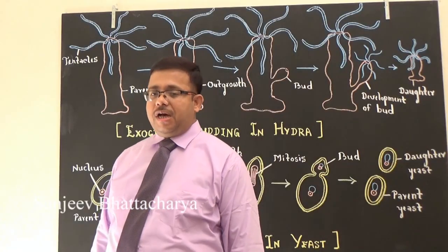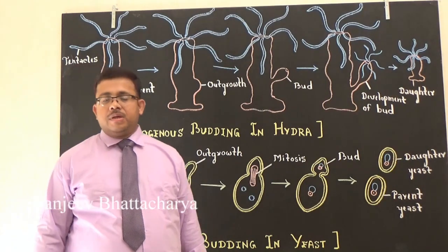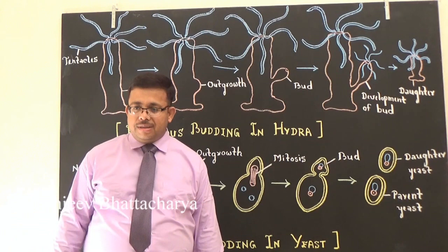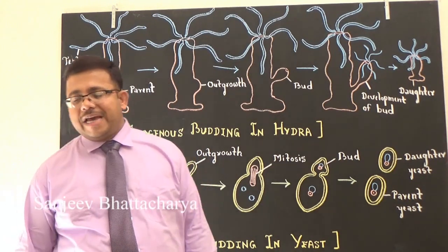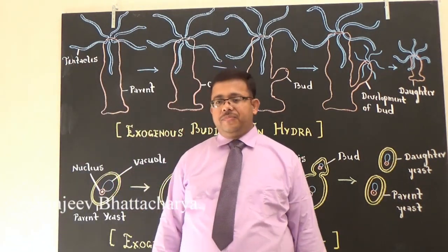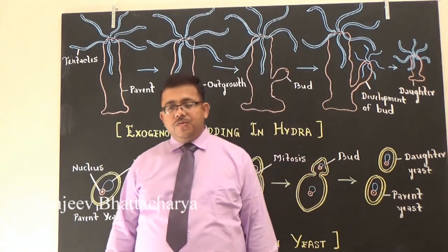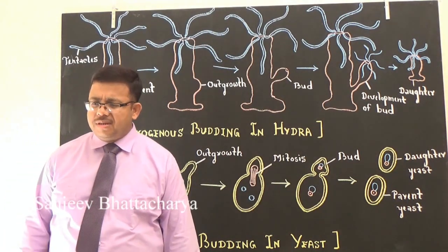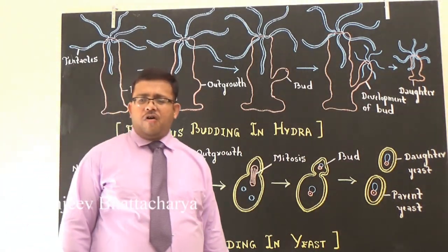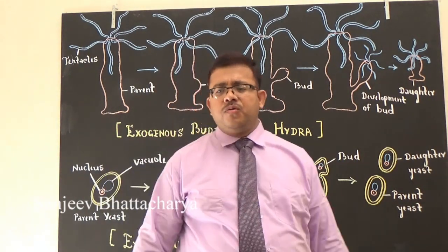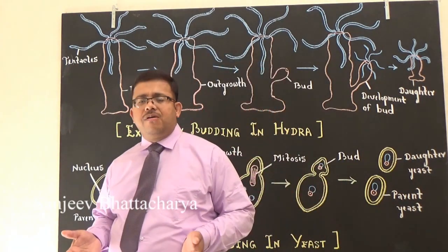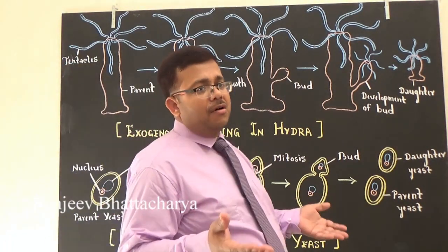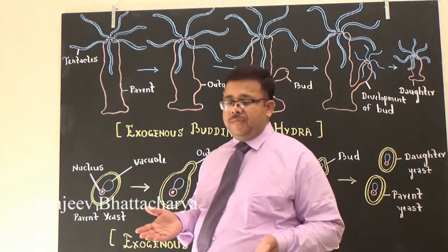A question asked in board examination: what type of organism can be considered immortal and why? The answer is unicellular protists — the best example is amoeba — in which a parent on maturity splits into two daughter cells and can be considered immortal because natural death does not occur in such organisms.